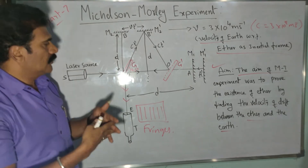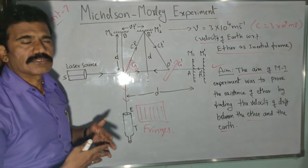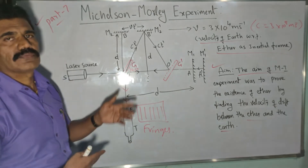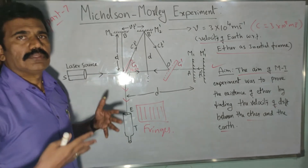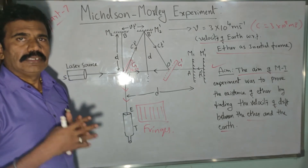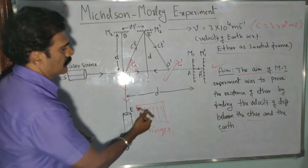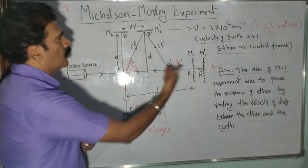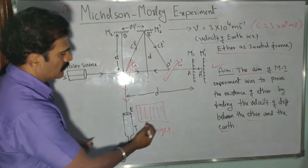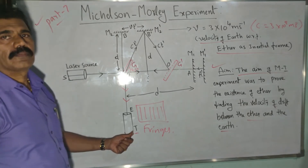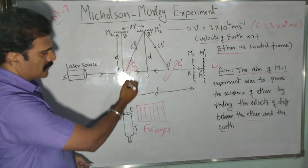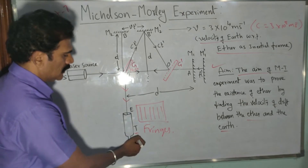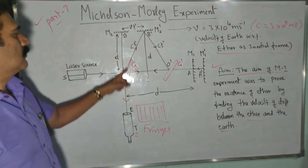The two reflected rays from mirrors M1 and M2 meet again at point O, where superposition of the two light waves takes place. You know the concept of interference — when two light waves of the same amplitude, frequency, and wavelength interfere, they form interference fringes. These alternate bright and dark fringes can be observed using a telescope T, which is kept exactly below the glass plate G.